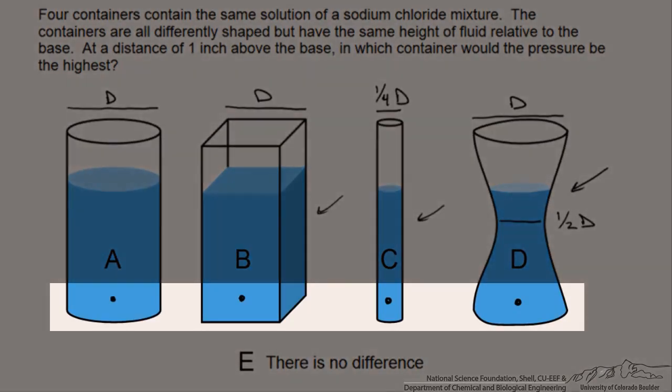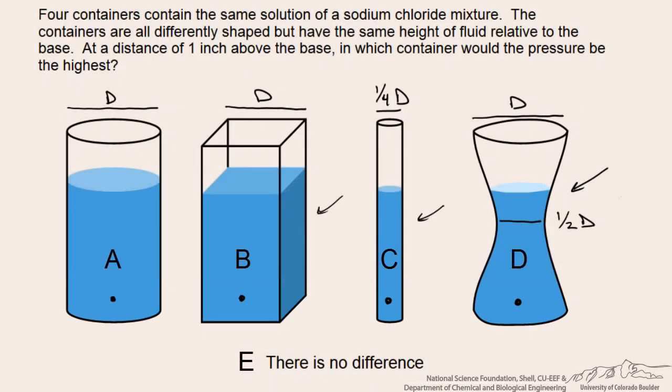So we are looking at these points that are 1 inch above the base. Each of the containers has the same height of fluid, but are different shaped in size. So choose a container that has the highest pressure at this point, or choose that there is no difference.